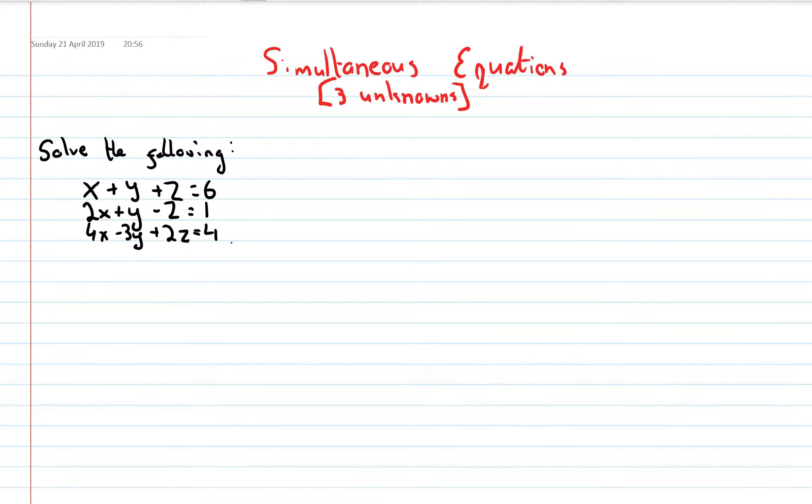In this video, we're going to solve simultaneous equations with three unknowns, or three variables. Here's the question. It says solve the following: x plus y plus z is 6, 2x plus y minus z is 1, 4x minus 3y plus 2z is 4.